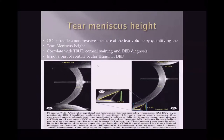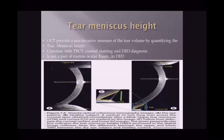Optical coherence tomography can provide non-invasive measures of tear film by quantifying tear meniscus height. In a normal eye the tear meniscus height is adequate, while in dry eye it is significantly reduced, making this measurement very helpful in diagnosis.